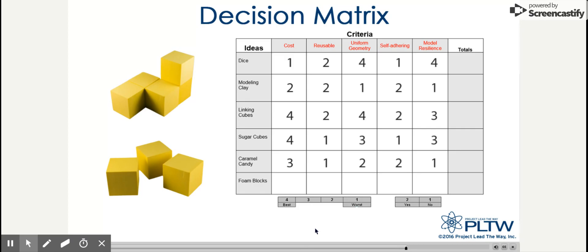Lastly, let's look at the foam cubes. They are kind of expensive, so we'll put a 1 for that. Reusable, we'll put a 2 there. They do come in precise geometry, so we'll give that a 4. Not self-adhering, so a 1 goes there. And they are fairly resilient, so we'll put down a 3.